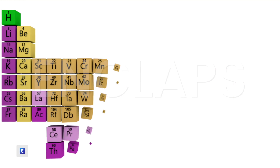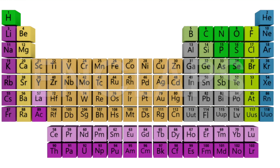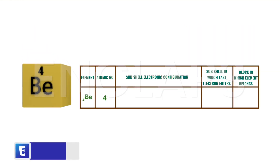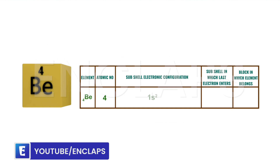Now consider the case of beryllium. Beryllium has its atomic number 4, so its subshell electronic configuration can be written as 1s2, 2s2. That means the last electron enters the S subshell, so beryllium belongs to S block in the periodic table.